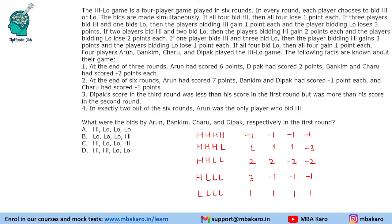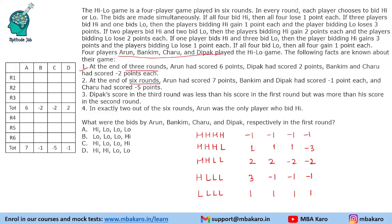The four players are Arun, Bikram, Charu, and Deepak — A, B, C, D. At the end of three rounds, Arun had scored six points, Deepak had two, Bankim and Charu had minus two each. We are also given information about the end of six rounds, and that Deepak's score in the third round was less than his score in the first round but more than his score in the second round. In exactly two of the six rounds, Arun was the only player to bid high.